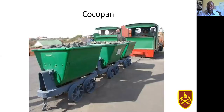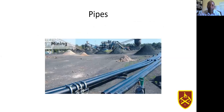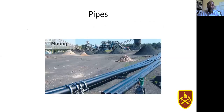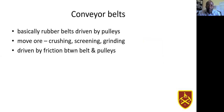That's an example of transportation equipment — the cocopan is used for dry material. For wet material or minerals in liquid form, you can make use of pumps and pipes. Then we have conveyor belts for loose material — you can't use conveyor belts for big boulders; you need to reduce the size so that you can handle the material via conveyor belts. That's another method that can be used to move material, using pipes and conveyor belts.